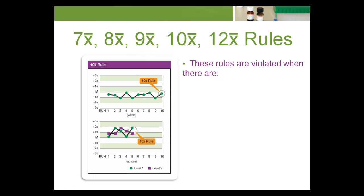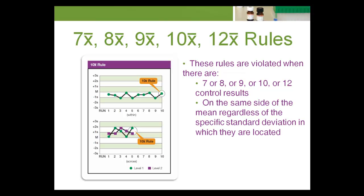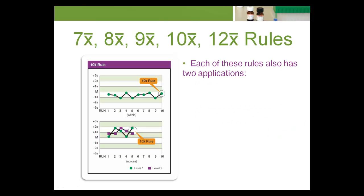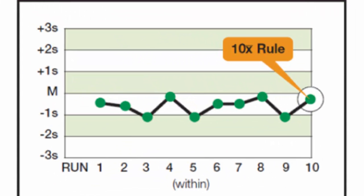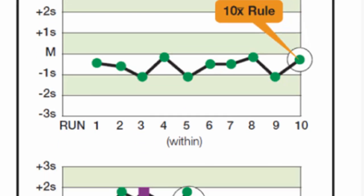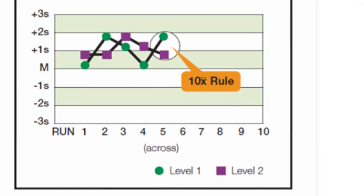The 7x, 8x, 9x, 10x, or 12x rules are violated when there are 7, 8, 9, 10, or 12 control results on the same side of the mean, regardless of the specific standard deviation in which they are located. Each of these rules also has two applications: within control material (e.g., all level 1 control results) or across control materials (e.g., level 1, 2, and 3 in combination). Within control material violations indicate systematic bias in a single area of the method curve, while across control materials violations indicate systematic bias over a broader concentration range.